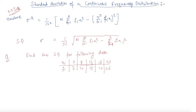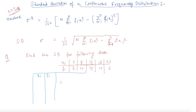To find the standard deviation we need Σ(fi · xi²) and (Σ fi · xi)². I will make a table with columns: xi, fi, fi·xi, xi², and fi·xi².